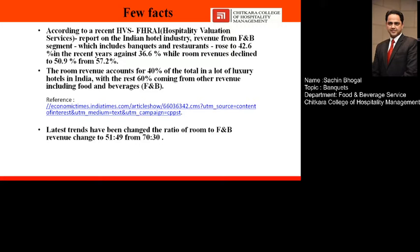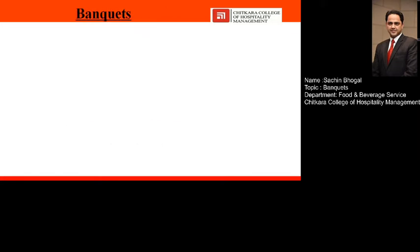Based on these facts, the latest trends show the ratio of room to food and beverage revenue has changed to 51:49, as compared to the earlier 70:30. That demonstrates how important banquets are in the food and beverage service department, and why this outlet is given so much importance as a revenue-generating department.